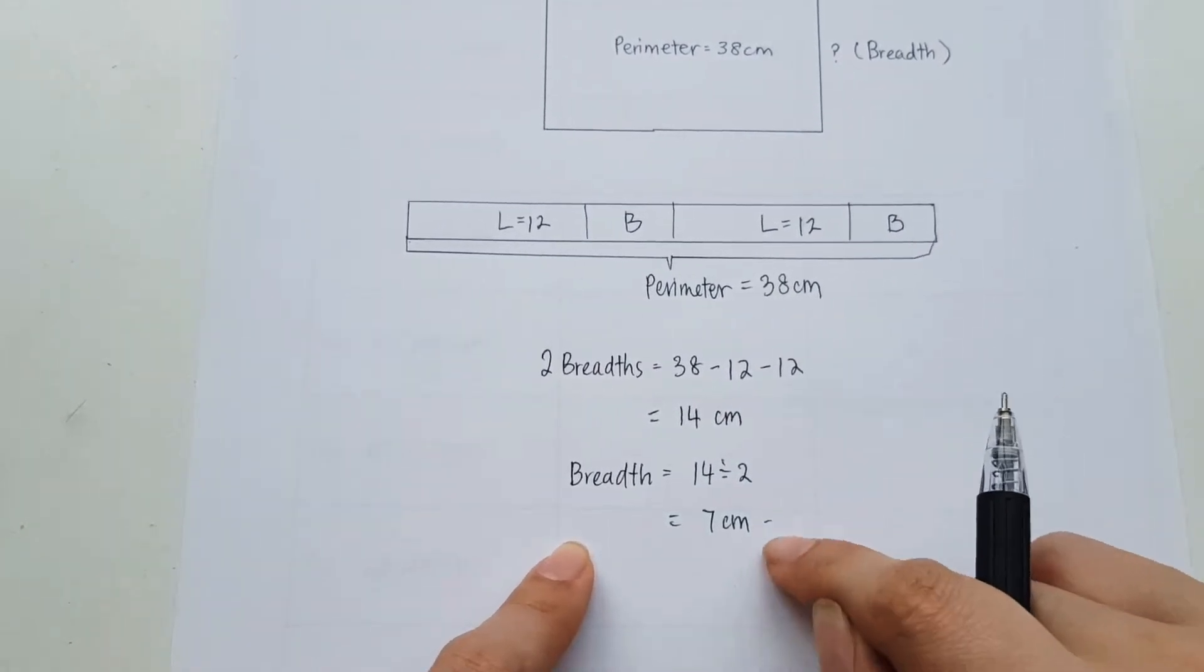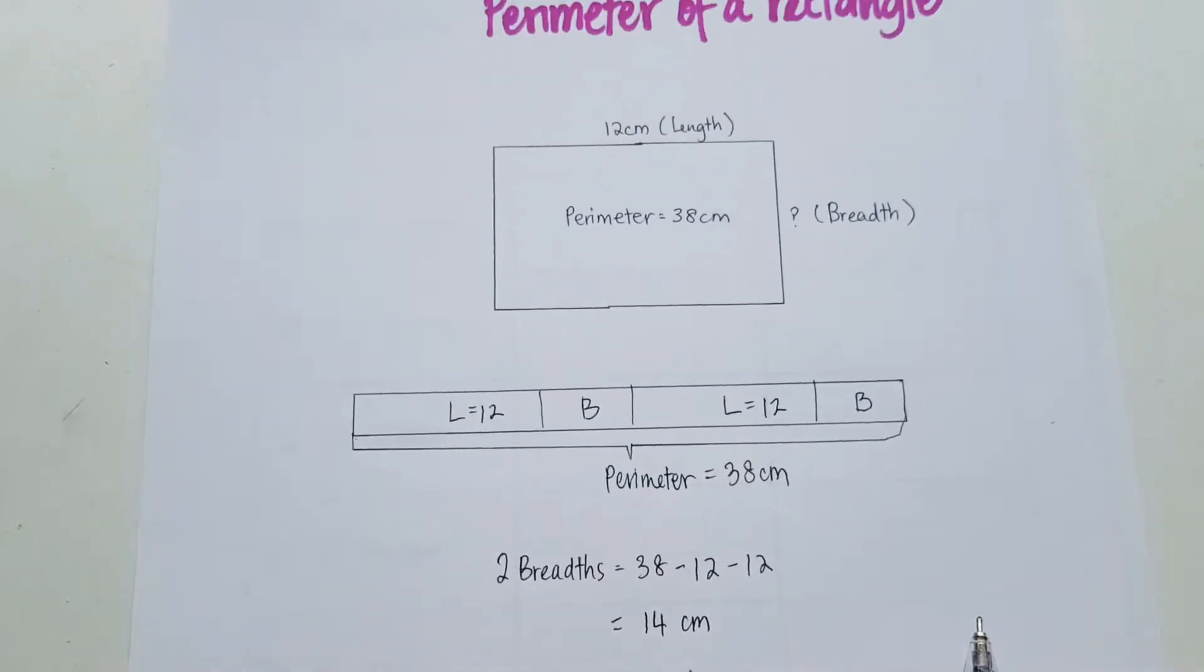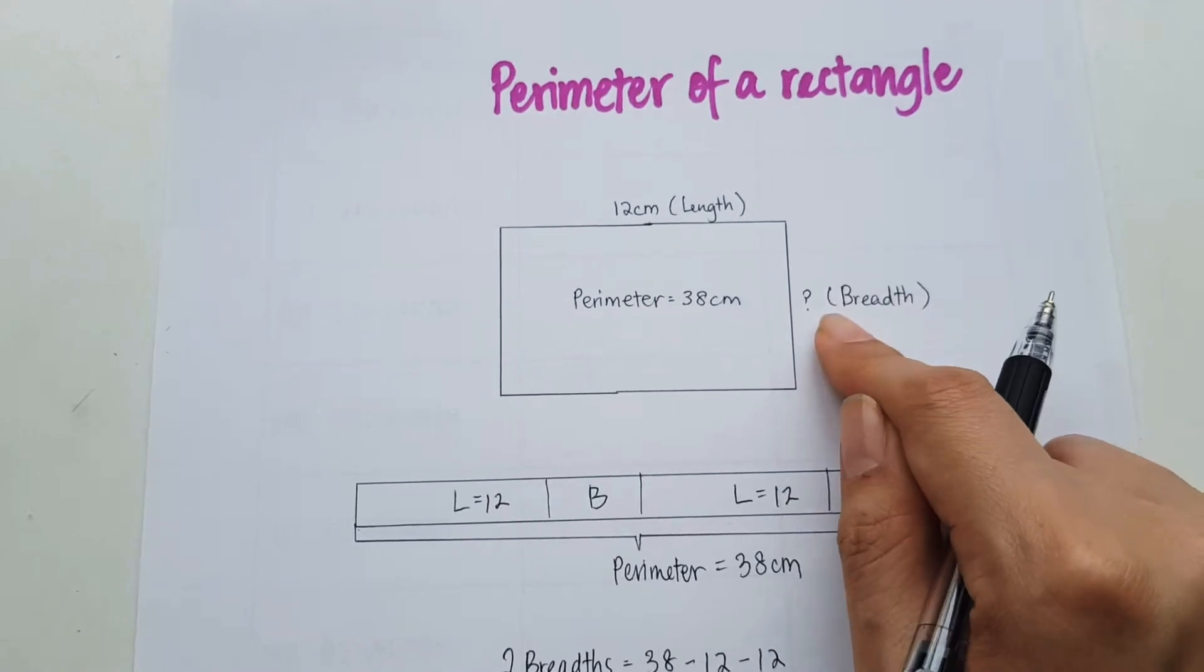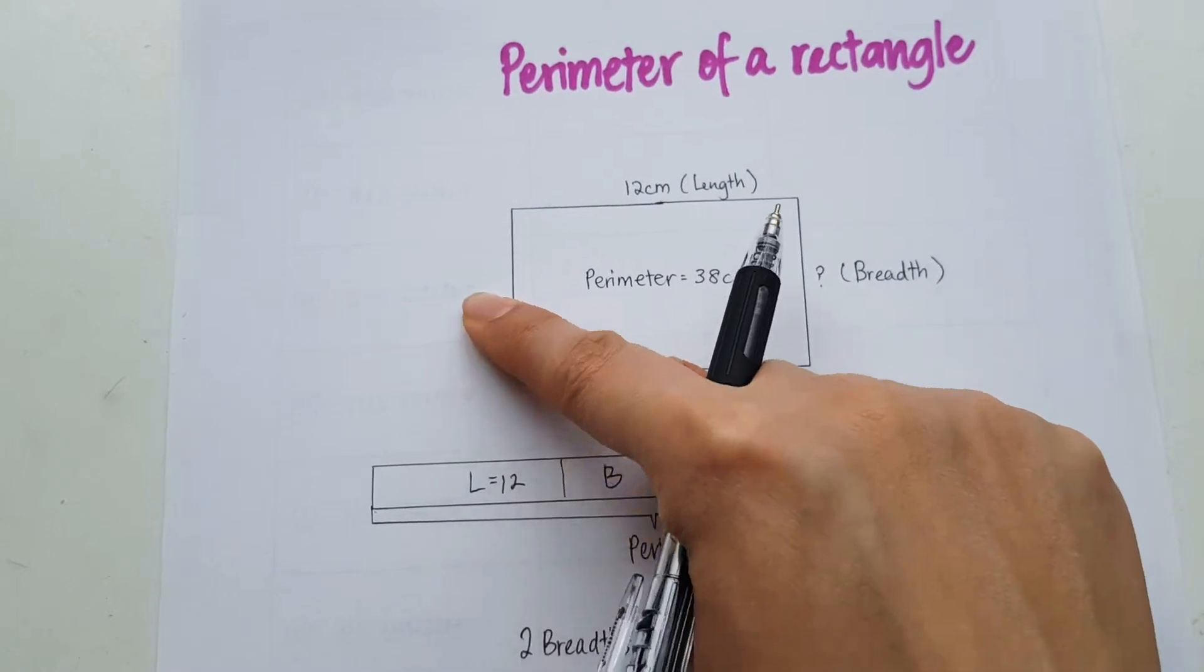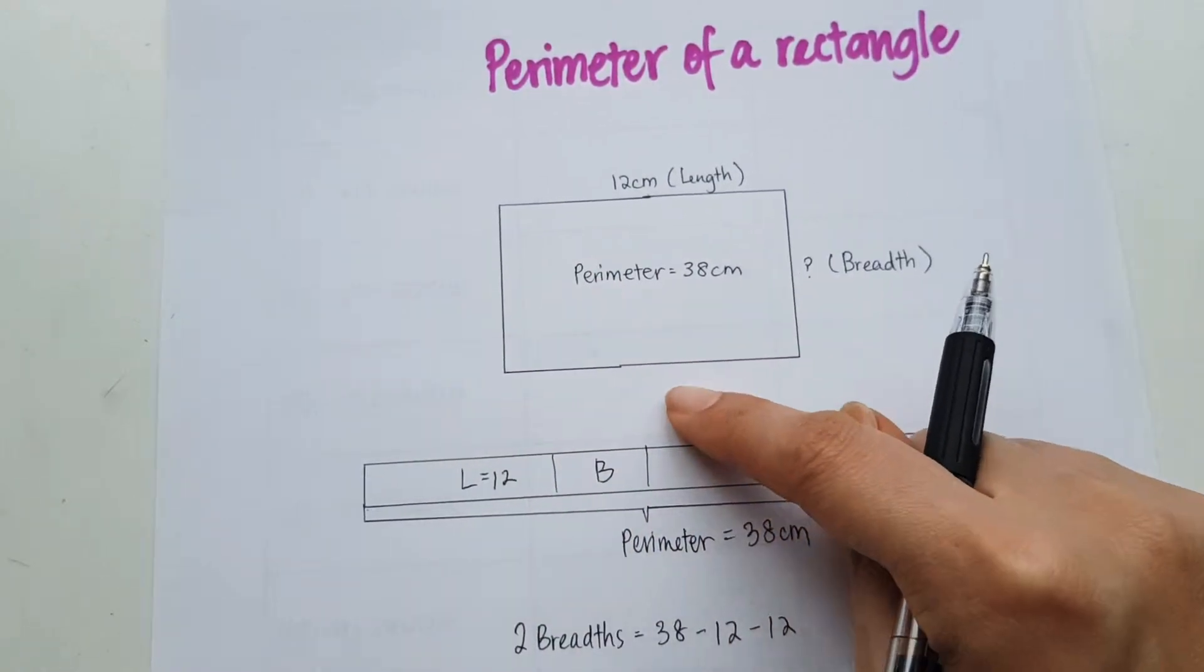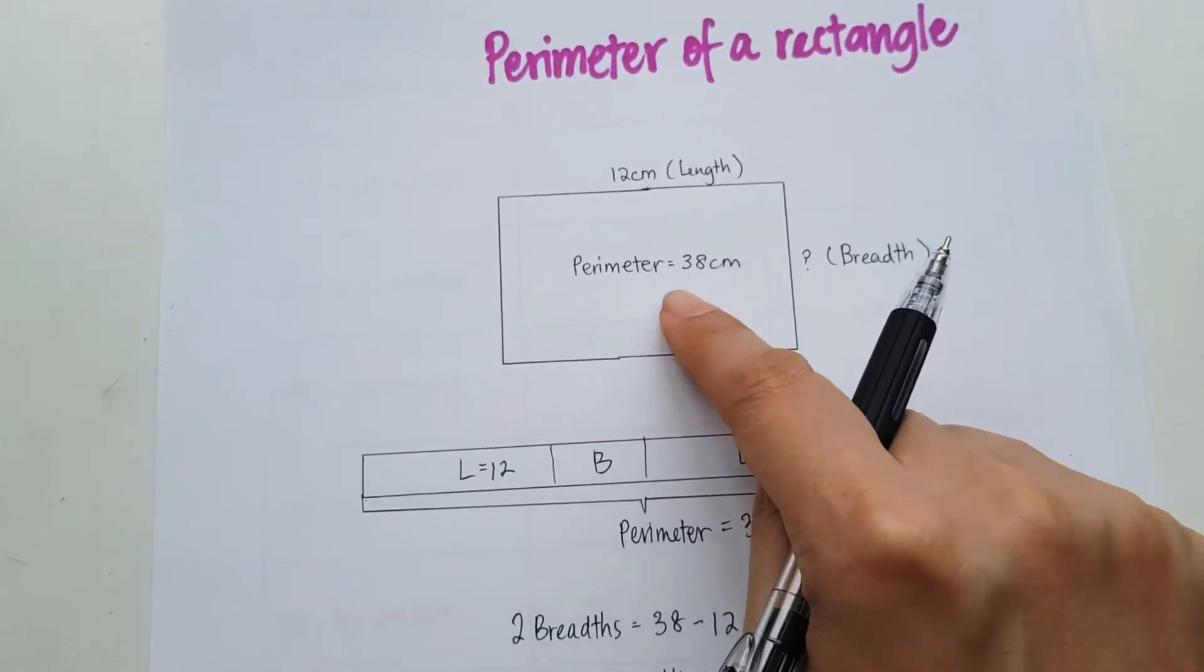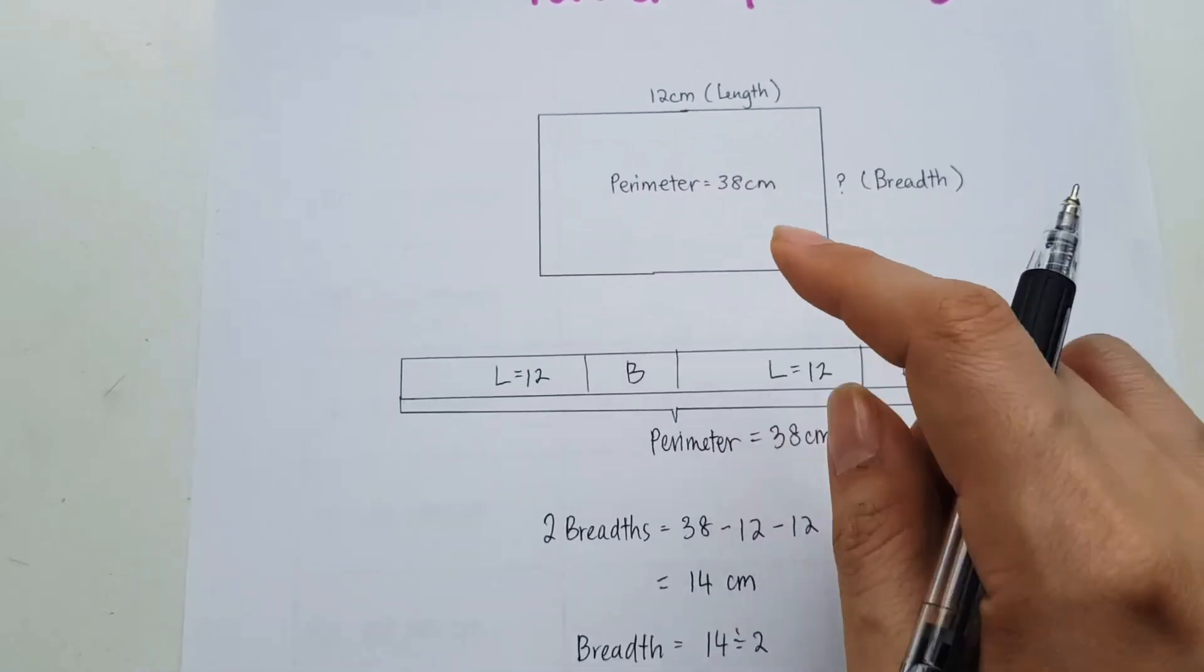Now after you get your answer, it's very important for you to check. So I'm going to put it back inside. Now, 7 plus 12 is 19. 19 plus 7 is 26. 26 plus 12 is 38. And therefore, this equals to 38. And so I know this is correct.